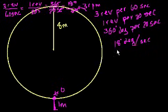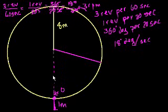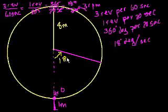The total number of degrees traveled in t seconds — if we say the angle from our starting point after t seconds, we travel 18 degrees per second. So if we travel t seconds, this angle is going to be 18t degrees. Now let's figure out their height as a function of t, or as a function of this angle.